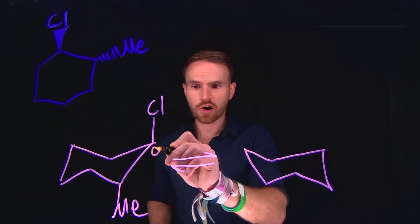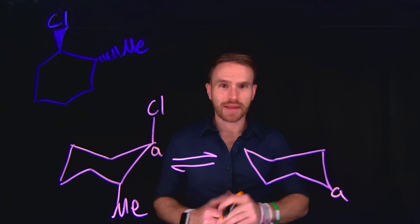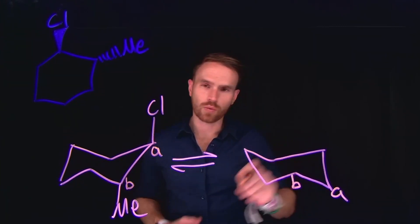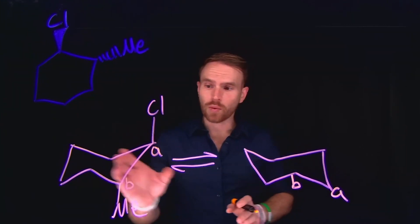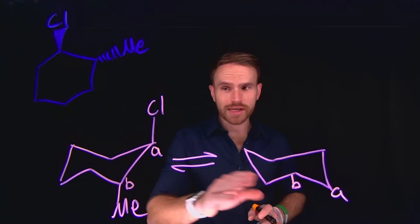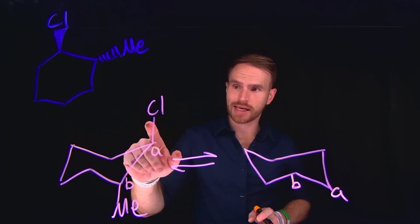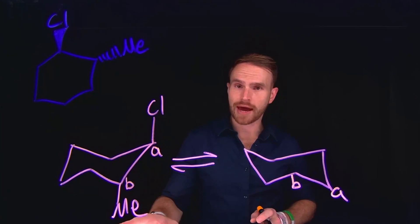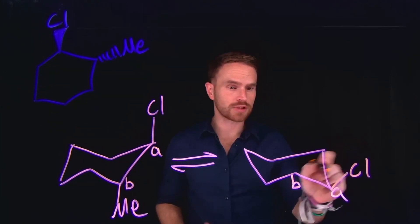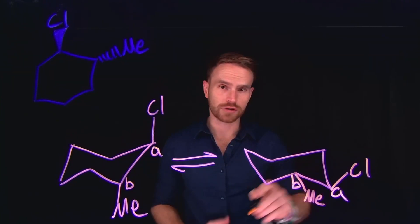What has happened is that carbon A has now become this carbon A, and the carbon which had the methyl group, labeled B, has now become this carbon B. Importantly, when this chair flip happens, the orientation of the substituents remains the same. Remember, in this case we drew the chlorine up and the methyl down — so the same will be true on this side, where we'll need to draw the chlorine in the upward direction and the methyl group going in the downward direction.